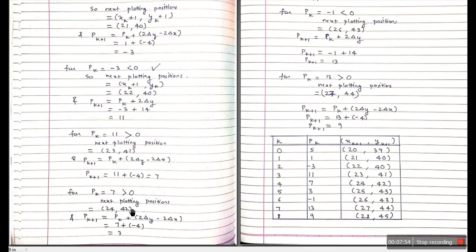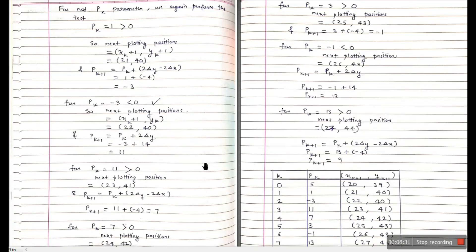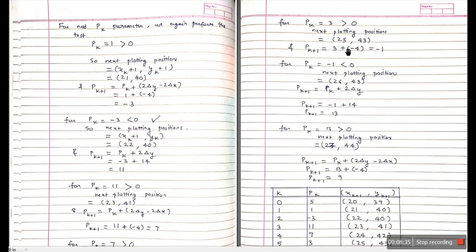Since Pk = 3 > 0, we increment both x and y: (24, 42) becomes (25, 43). Next decision parameter: 3 + (-4) = -1. Since -1 < 0, we increment only x and keep y the same: x goes from 25 to 26, y stays at 43, giving (26, 43). Next decision parameter: -1 + 14 = 13. Since 13 > 0, we increment both x and y: (26, 27) becomes (27, 44).